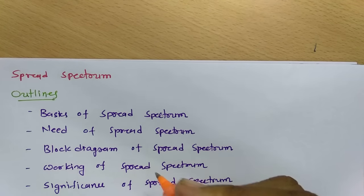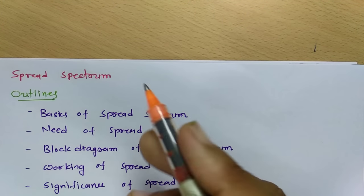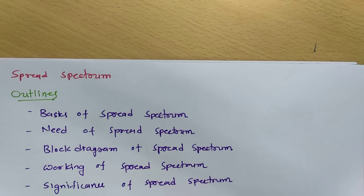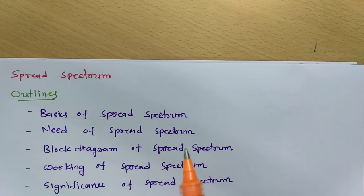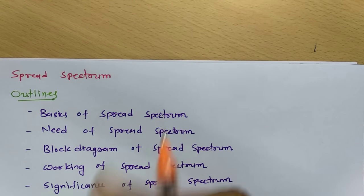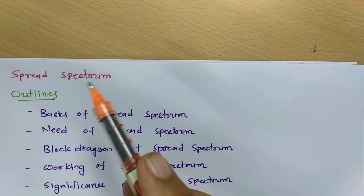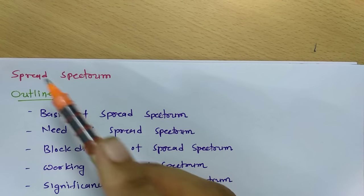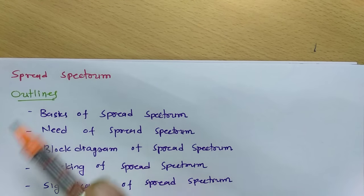First of all, what is spread spectrum and why do we need it? When you transmit information with a band-limited signal and send it over a channel, there are many limitations of a band-limited channel. So what we do is we try to increase the bandwidth of the information we forward as a message. Spread spectrum is a technique where we increase the bandwidth of information.